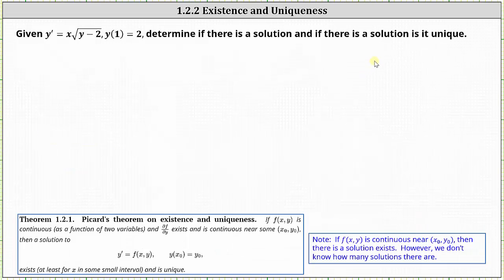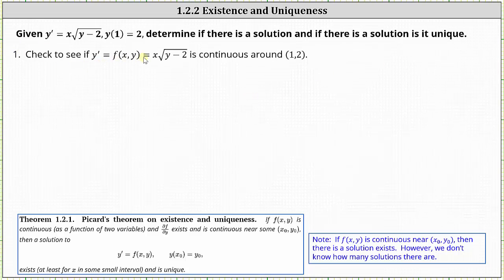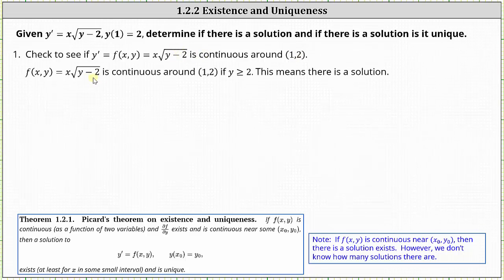For the second example, we have y prime equals x times the square root of the quantity y minus two, and we're asked to determine if there is a solution and if it's unique with initial condition y of one equals two. We apply Picard's theorem: the first step is to check if f of x comma y equals x times the square root of the quantity y minus two is continuous around the point one comma two. When x is one and y is two, we have one times the square root of zero, which equals zero. Therefore f of x comma y is continuous around one comma two as long as y is greater than or equal to two, meaning a solution exists.